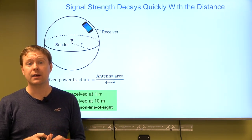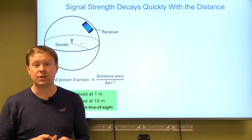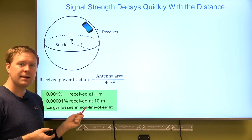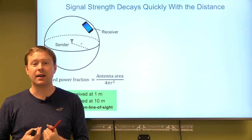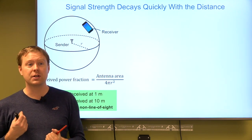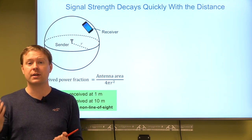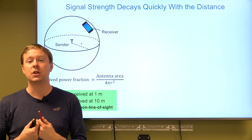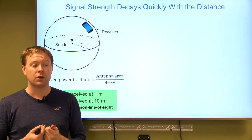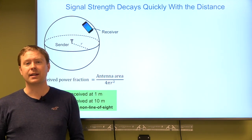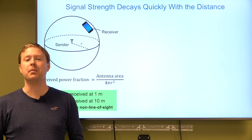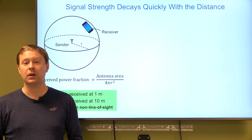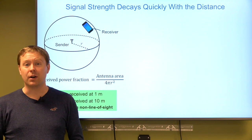And typically you are much further away than that in cellular communications. This also assumes line-of-sight to the transmitter. If the signal needs to propagate through a wall or bounce off objects, you lose even more. You should be lucky to receive one out of one million parts of the transmitted signal power — usually it's below one in a billion.